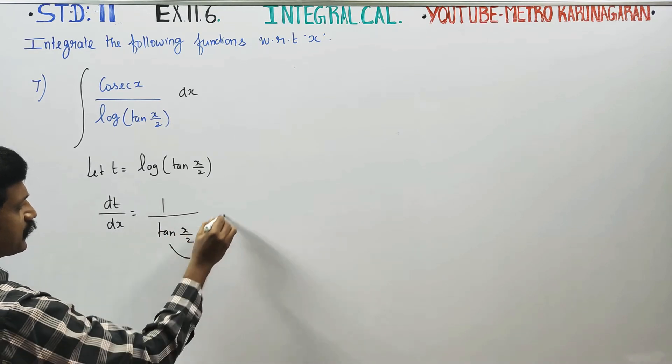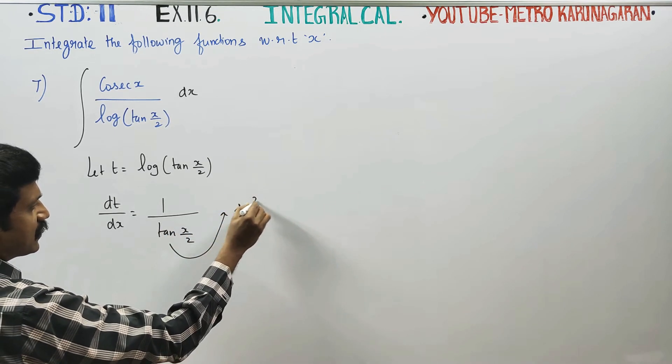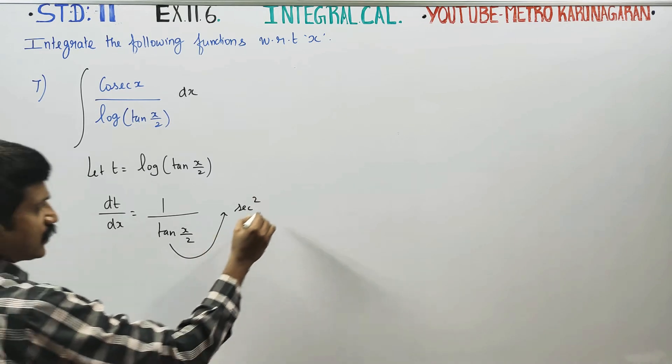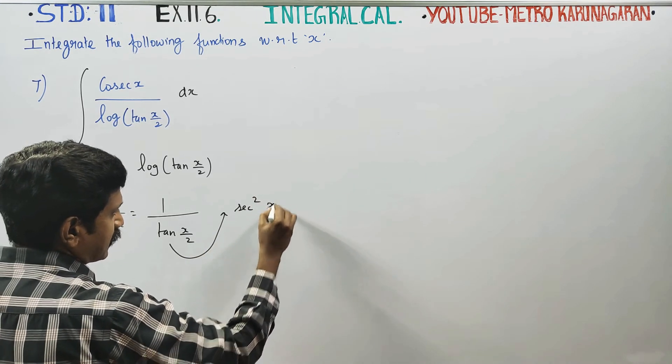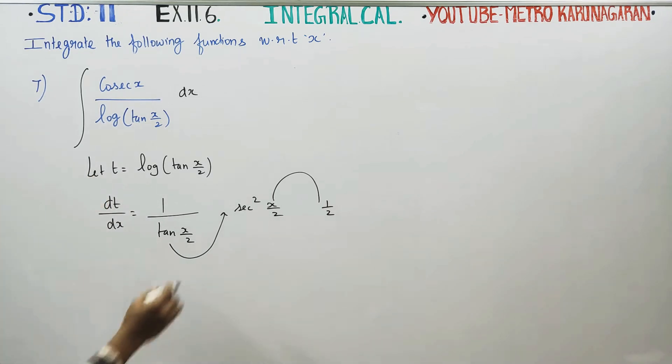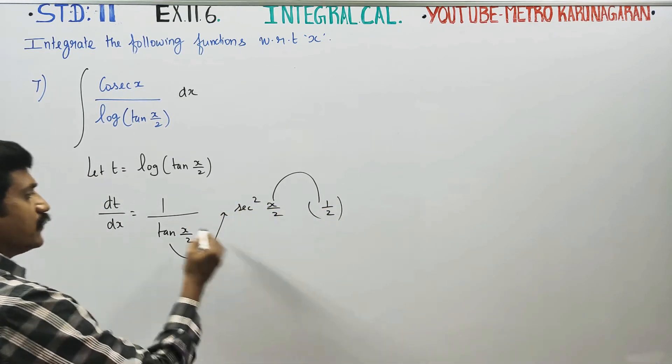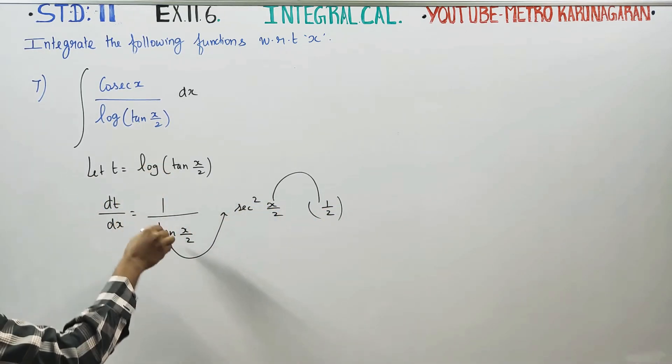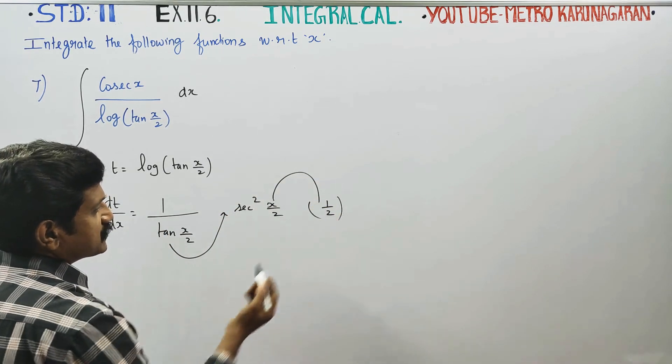Using the chain rule: tan differentiates to secant square, secant square x by 2, x by 2 differentiates to 1 by 2. Chain rule applied. This gives log differentiation, tan differentiation, and x by 2 differentiation.